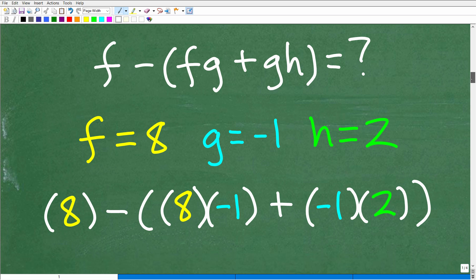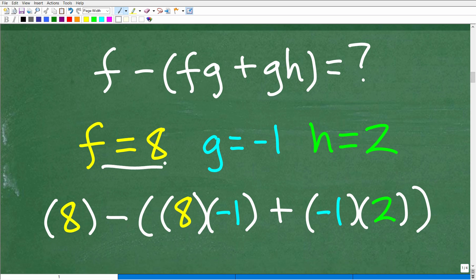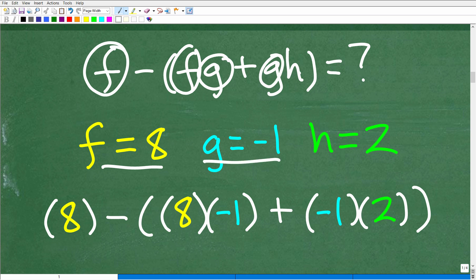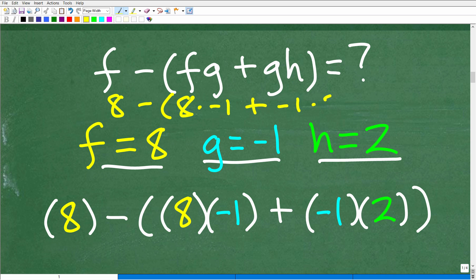Okay. So let's go back to our problem here. So we know that f, we have the value for f. It is 8. So we're going to replace these fs right here. Okay. With 8, this g will replace with negative 1. And this g will be negative 1 as well. And this h will be 2. But when we replace these variables with numeric values, you want to use parentheses. You just don't want to be like, here, let me see here if I could kind of do this a little bit. Be like, okay, let's see here. This is 8 minus parentheses. 8 times g is negative 1 plus this g again is negative 1 times 2.